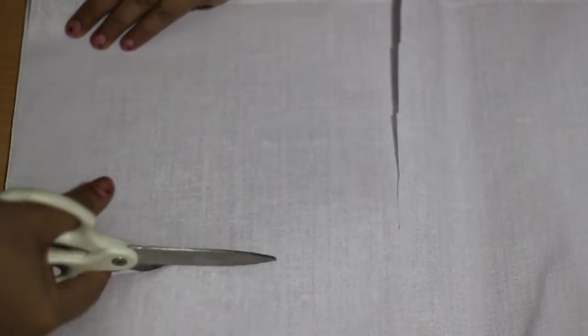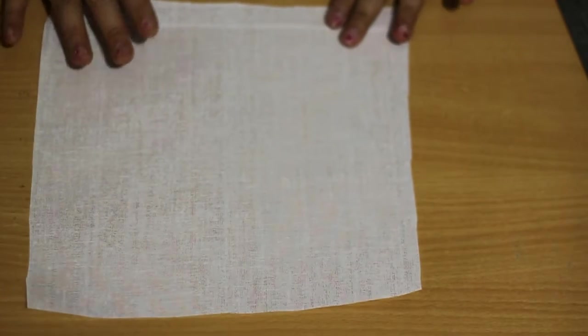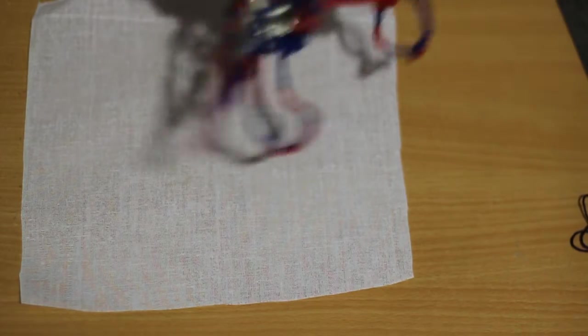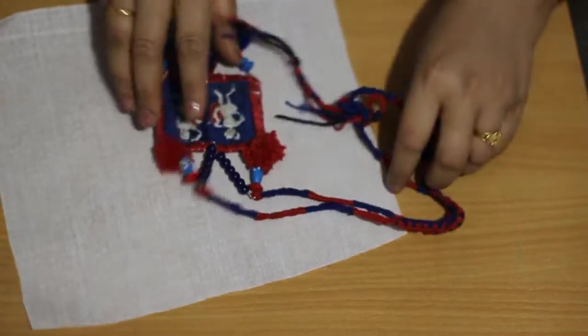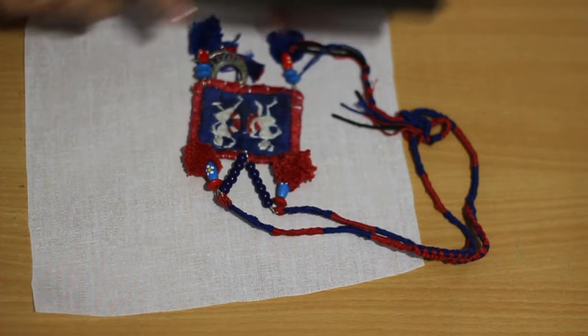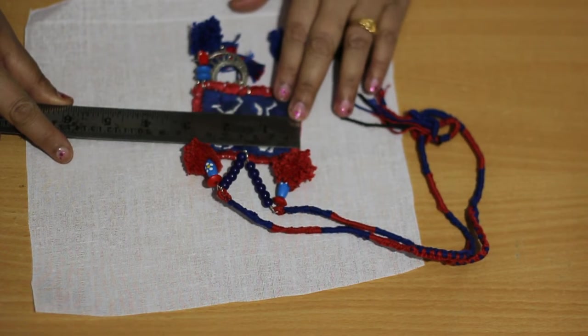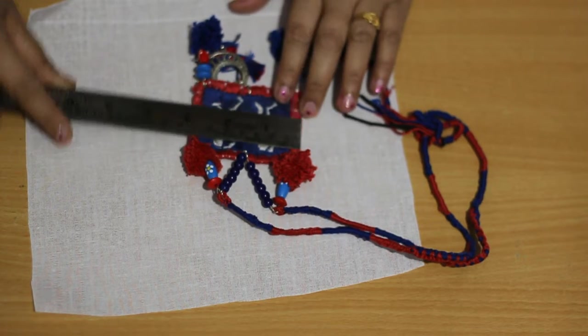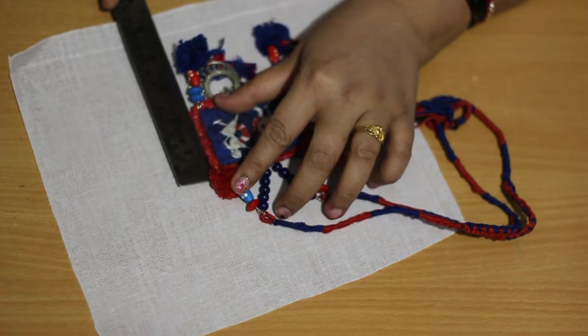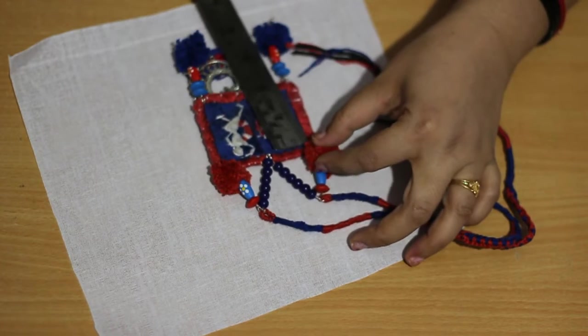In short, bohemian is also called boho jewelry. First cut the buckram fabric, then tack the fabric onto the frame or embroidery hoop. Before that, draw your design which you want. Now we are going to make a square shape pendant. Measure the length or the size of the pendant.